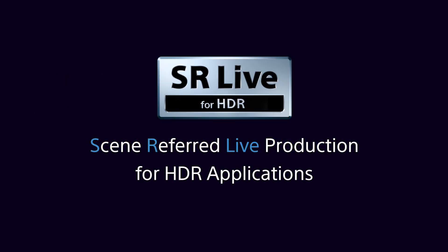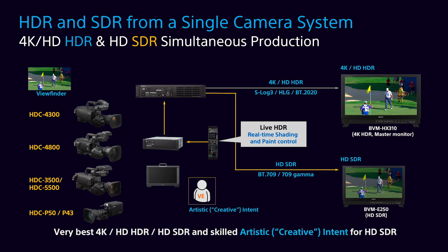Our HDR production workflow is called SR-Live, and it stands for Scene Referred Live for simultaneous creation of HDR and SDR programs. All CCUs and baseband processing units of Sony professional cameras can output HDR and SDR signals simultaneously. We have developed a method for creating the HDR signal while maintaining the practice of shading or painting the cameras while watching the SDR displays. The relationship between the HDR and SDR signal is defined by a gain difference between the two paths — we call it SDR gain.